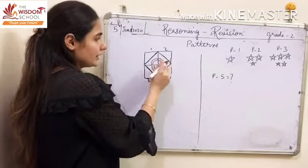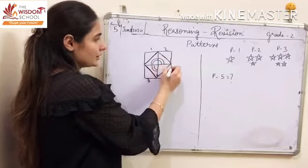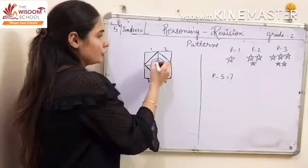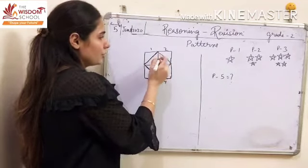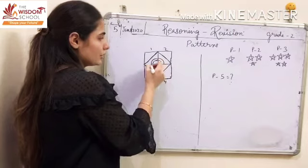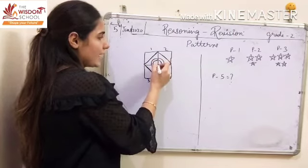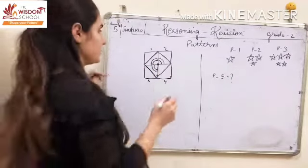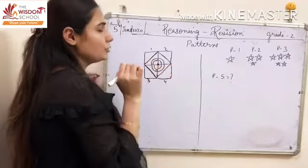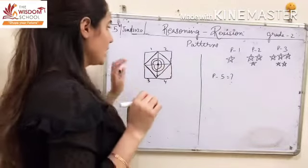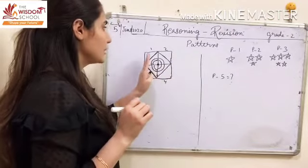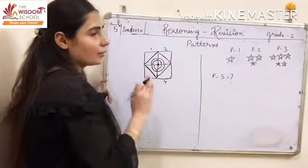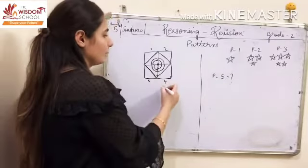First, children, you will join the dotted line — that is your first step. Then you will see there are two curved lines at the center. In all three boxes, two curved lines are drawn, so we will draw two curved lines in the fourth box too. The fourth box now looks similar to the first, second and third boxes — this means our pattern is correct and complete.